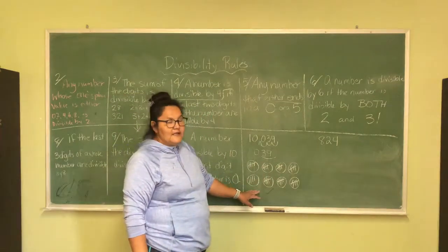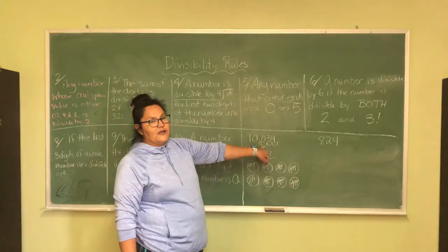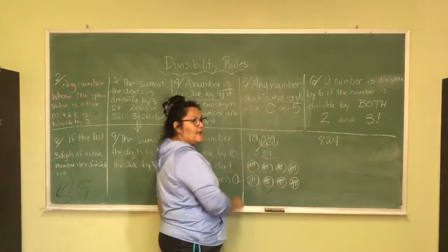It doesn't work. So, 39 does not evenly divide into it, therefore, 10,039 does not, or is not divisible by 8.